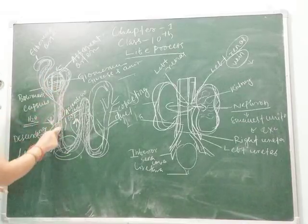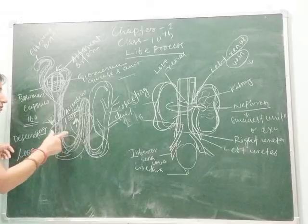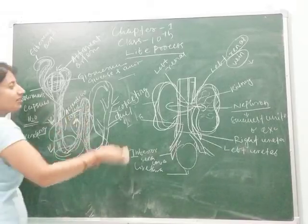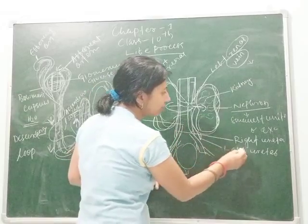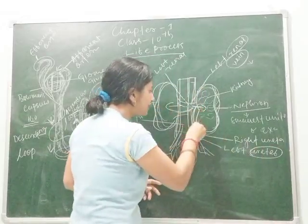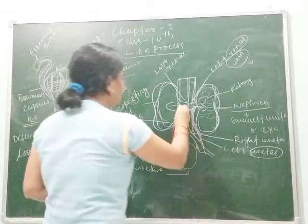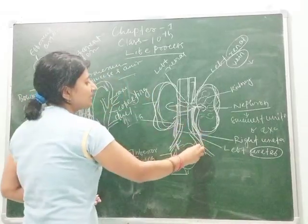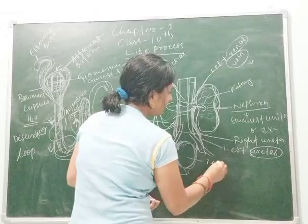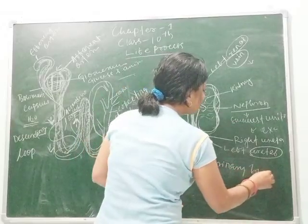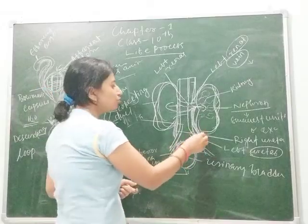During the movement of the filtrate through the tubules, water and salt are absorbed by the descending and ascending lobes. The remaining unfiltered substance collects in the collecting duct, and is then passed gradually through the ureter towards the urinary bladder. The ureter carries urine to the urinary bladder.